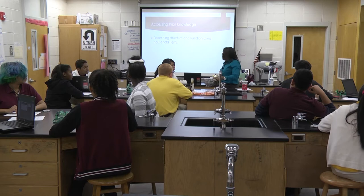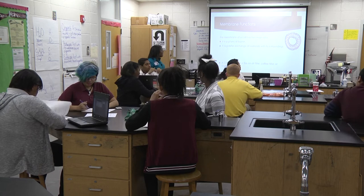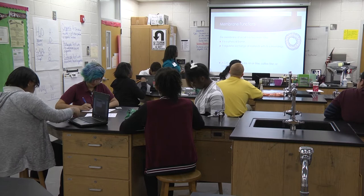With that in mind, the membrane of a cell has two main roles — let's fill this in on our guided notes. It is a physical barrier: barriers mean they stop things from crossing or passing through. And it regulates exchange of materials with its surroundings — it controls what can cross the barrier. So a cell membrane is like an air filter, like a coffee filter, and like a strainer.